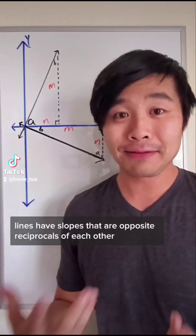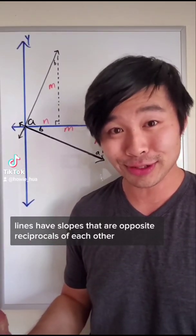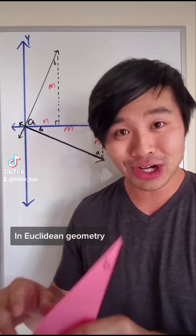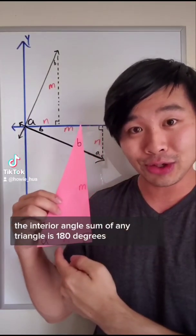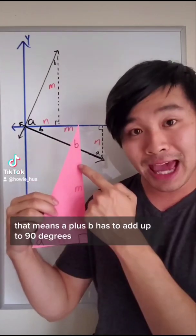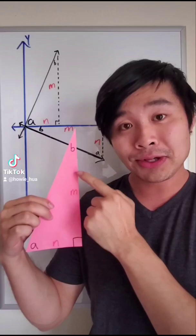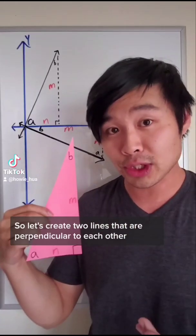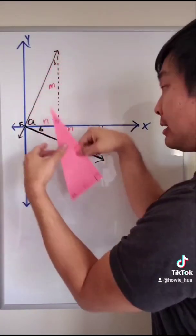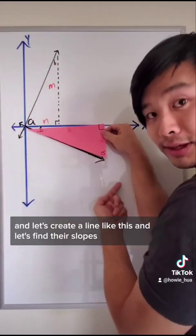Why do perpendicular lines have slopes that are opposite reciprocals of each other? The answer comes down to congruent right triangles. In Euclidean geometry, the interior angle sum of any triangle is 180 degrees. So if we have a right angle, that means a plus b has to add up to 90 degrees. So let's create two lines that are perpendicular to each other, knowing this information. So let's create a line like this. And let's create a line like this. And let's find their slopes.